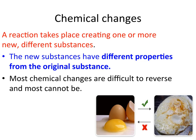A chemical change, on the other hand, is a reaction that produces a new substance with different properties. That's the key — they're going to have different properties from the original substance. If we look at something like NaCl, just regular table salt, this is produced from two elements, Na and Cl.